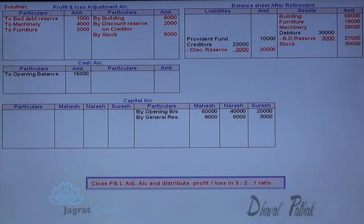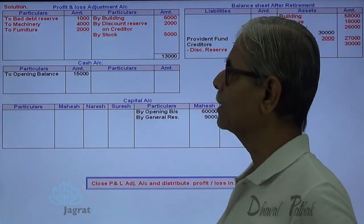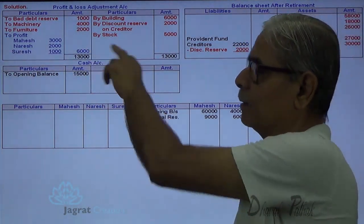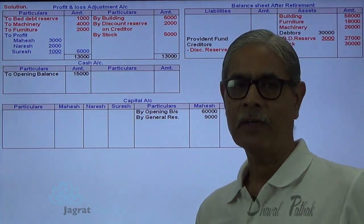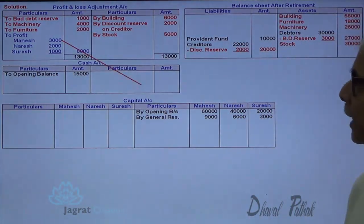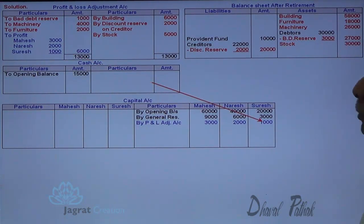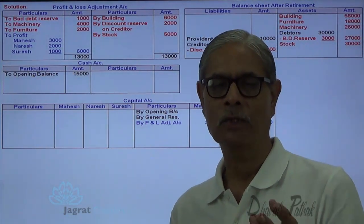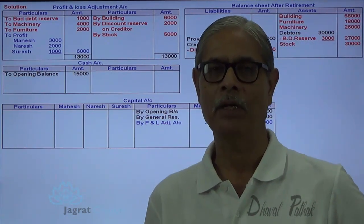Now close the profit and loss adjustment account. Credit side is 13,000 and debit side is 7,000, so profit on revaluation is 6,000. This profit is distributed amongst partners in the ratio of 3:2:1 — Mahesh gets 3,000, Naresh 2,000, and Suresh 1,000 — credited to their respective capital accounts.